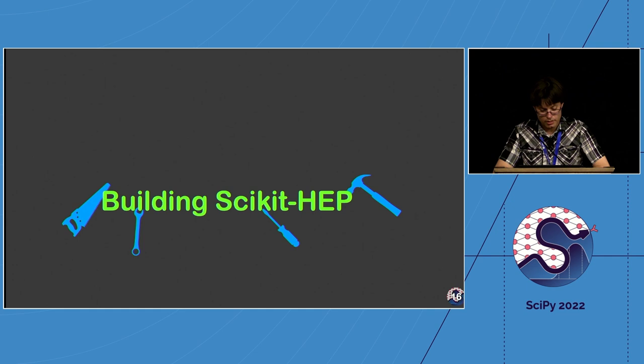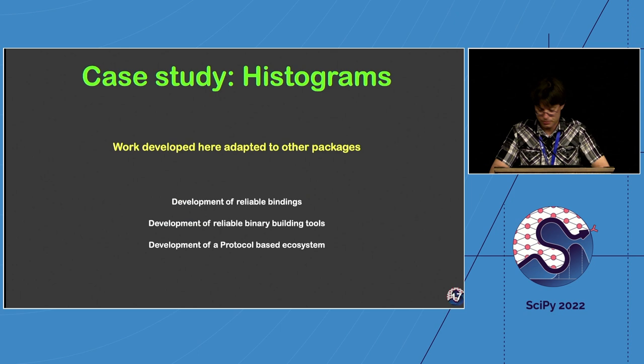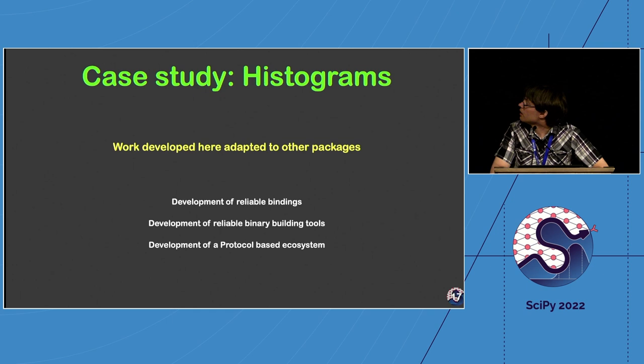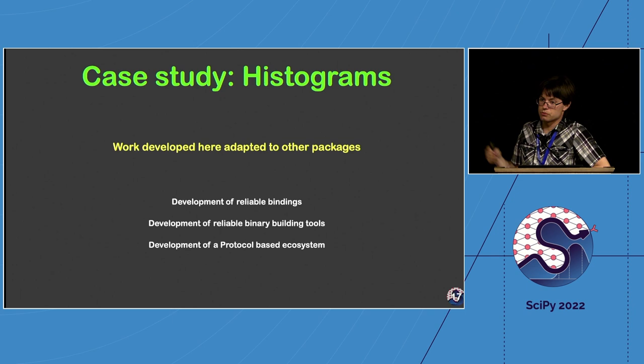Let's talk about how we build scikit-hep and started producing binary packages, which is really important because we have giant datasets and needed to compete in terms of performance. I'm going to look at histograms — something I was heavily involved in — which preceded changes in awkward array and some other packages. There were several things to address: reliable bindings between C++ and Python, the ability to build binaries in a reliable way and ship them for easy use on clusters or students' computers, and making things talk together across individual packages.